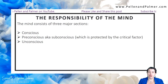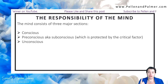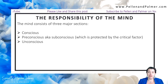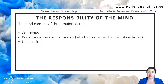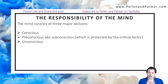The responsibility of the mind. The mind consists of three major sections. First is the conscious. Then we've got the pre-conscious, sometimes known as the subconscious. And it's there, and the subconscious is protected by what's known as a critical factor — I'll go more into that later on. And then you've got the unconscious.